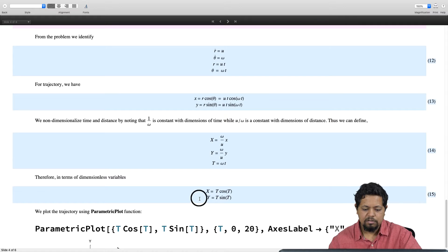When I do that for x and y coordinate, I simply get t cos t and t sin t, where x and y are dimensionless coordinates and t is dimensionless time.